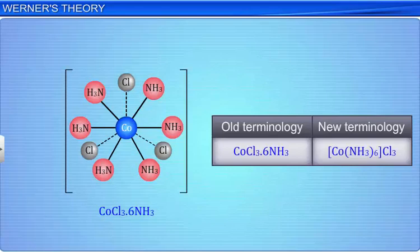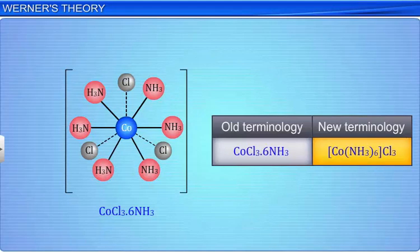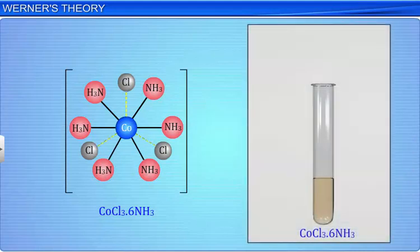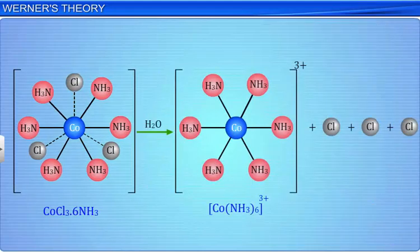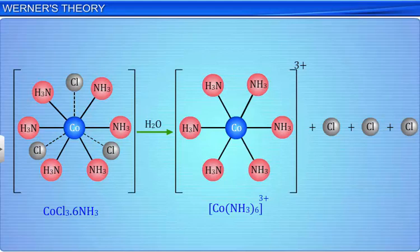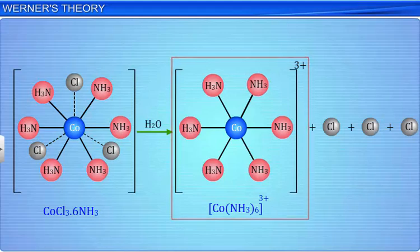In modern terms, the complex is written as [Co(NH3)6]Cl3. The 3 chloride ions are ionic and hence are precipitated as silver chloride by silver nitrate. Thus, the complex will ionize in solution and give 4 ions: one [Co(NH3)6]3+ ion and 3 chloride ions.